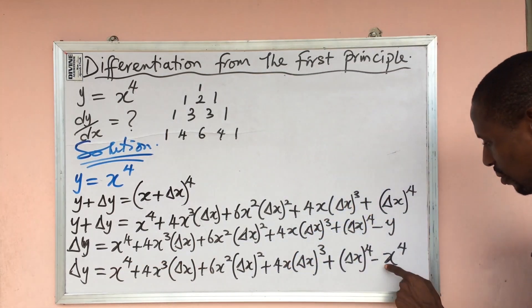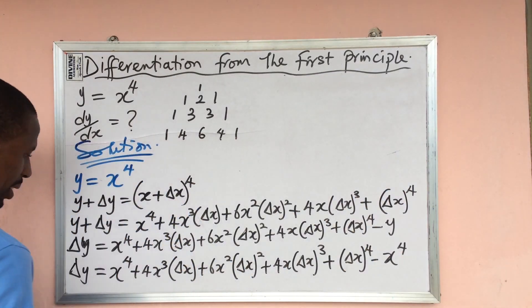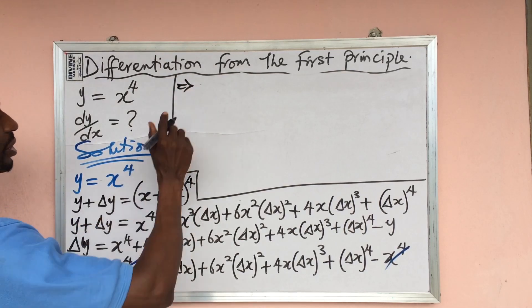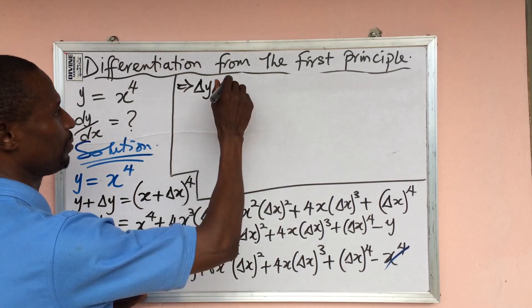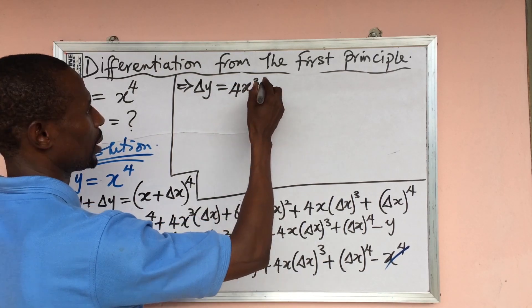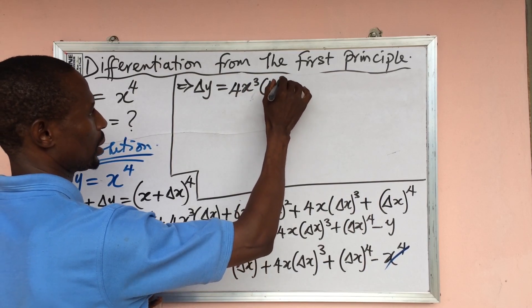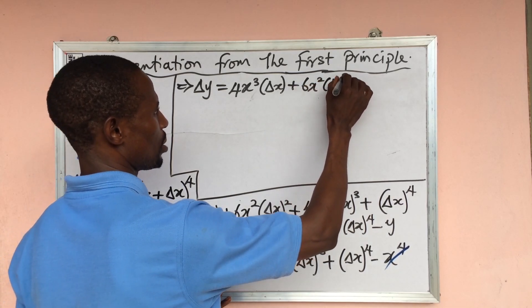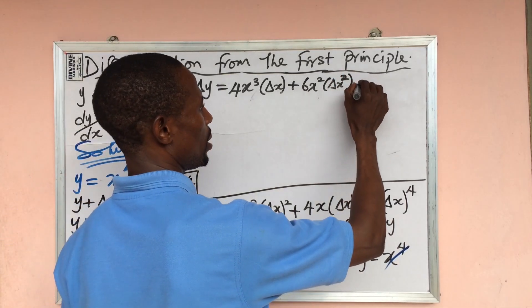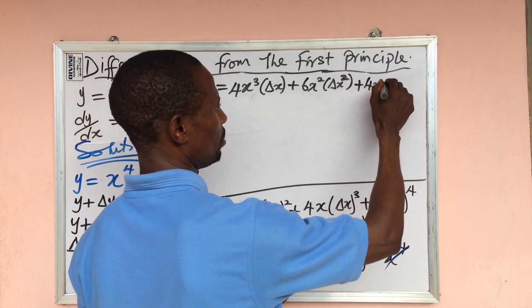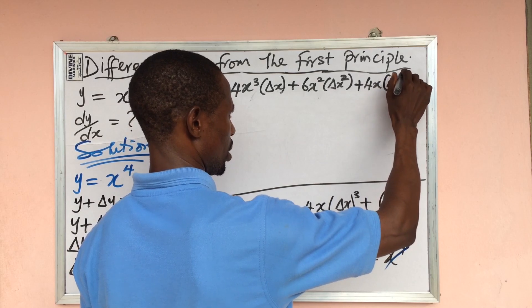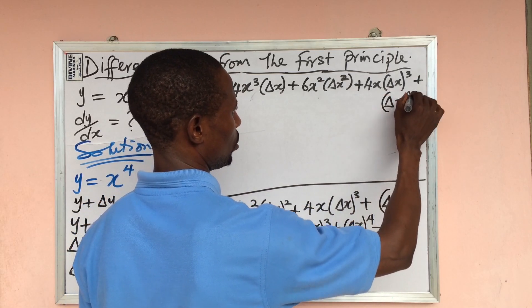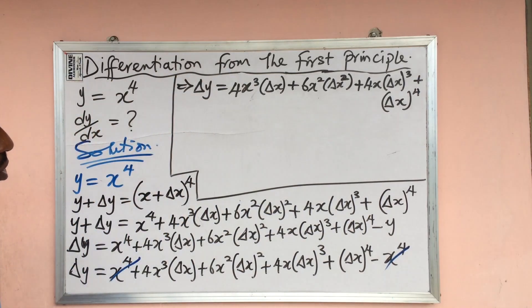This implies we are left with: δy equals 4x³(δx) plus 6x²(δx)² plus 4x(δx)³ plus (δx)⁴.